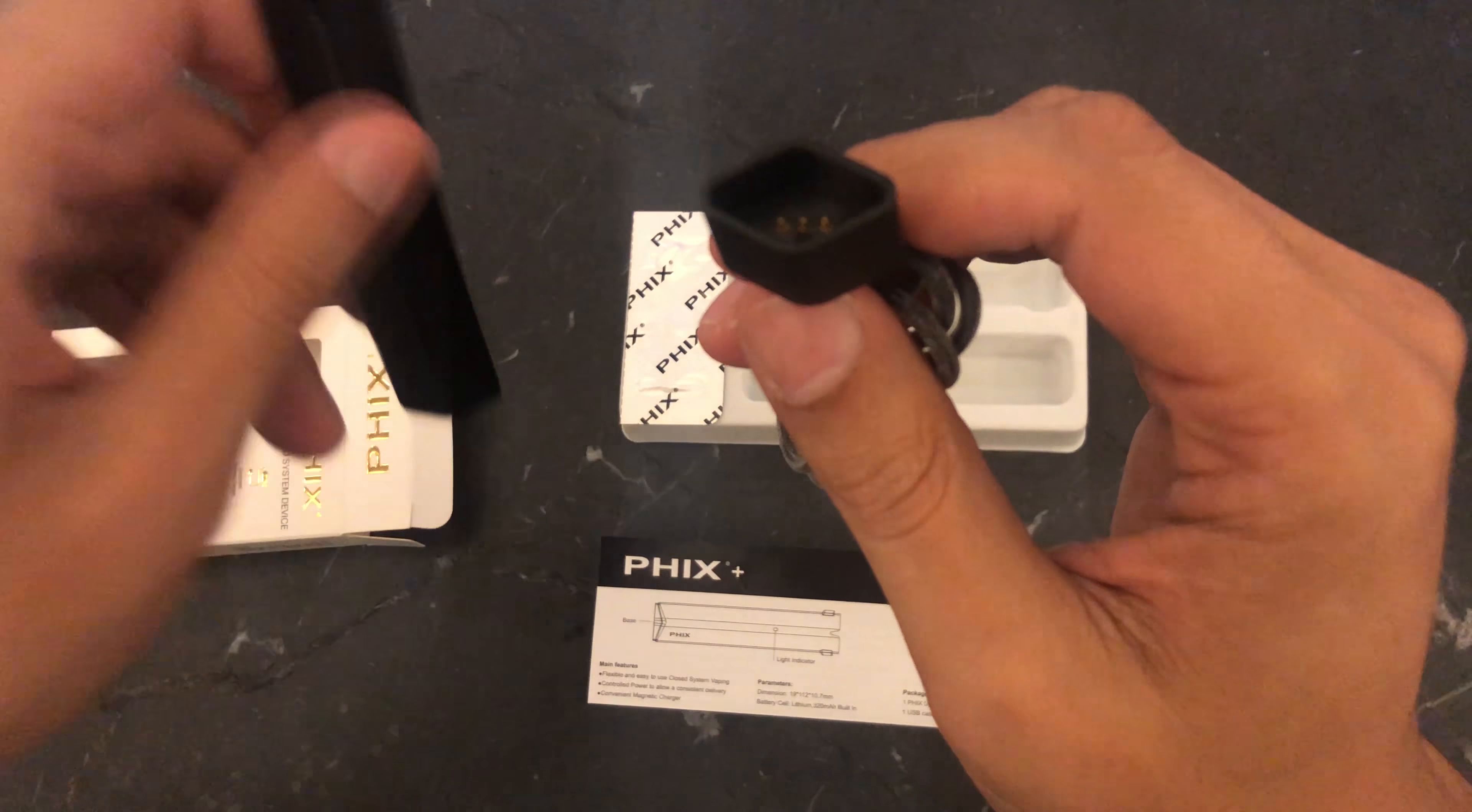So if we plug it in, notice that the light pulsates now. There's no more solid light. And this one is orange. I don't know if you can see it. It goes blue for high battery, orange for medium battery, and red when it's low.